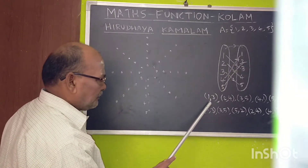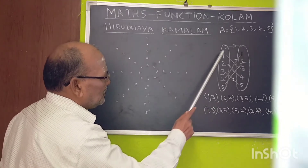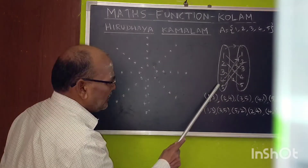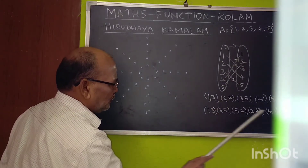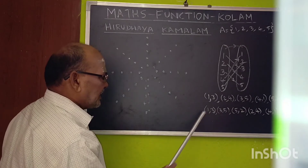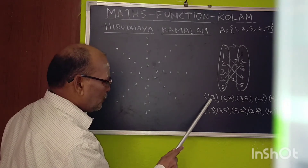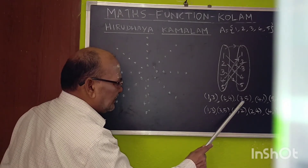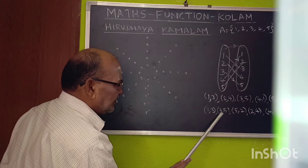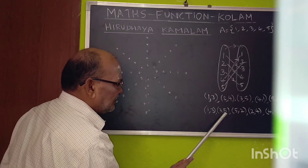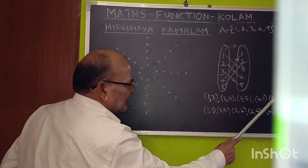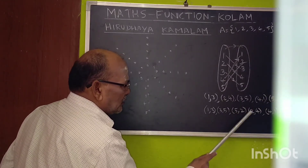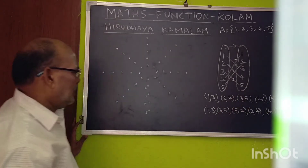Arranging in order: 1→3, 2→4, 3→5, 4→1, and 5→2. For convenience, I have written 1, 3 — the 2nd element is 3. Where is 3? 3→5, the 2nd element is 5. The next is 5→2, and 2→4, and 4→1.